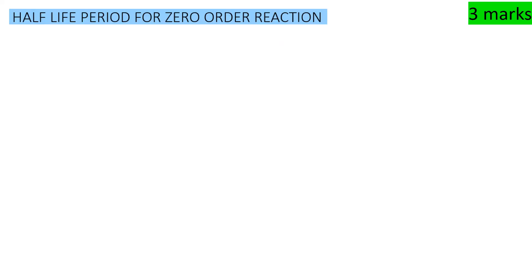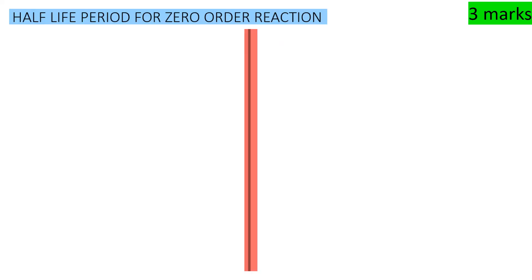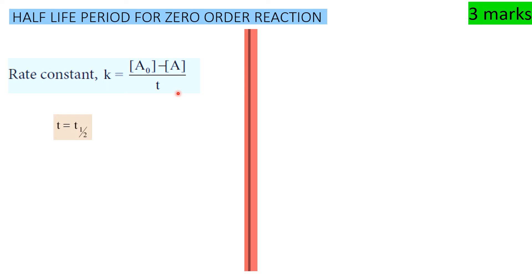Half-life for zero order reaction. The rate constant k equals (A0 minus A) divided by t. At half-life, time equals t½ and concentration A equals A0 divided by 2.